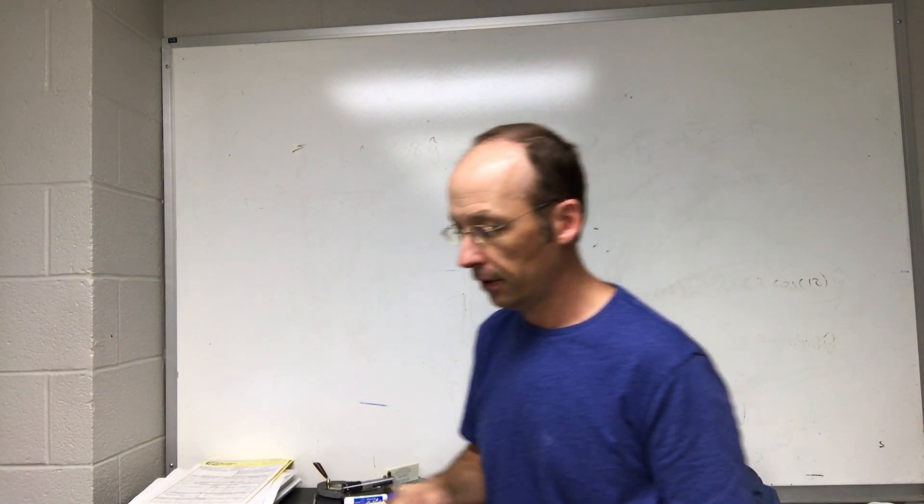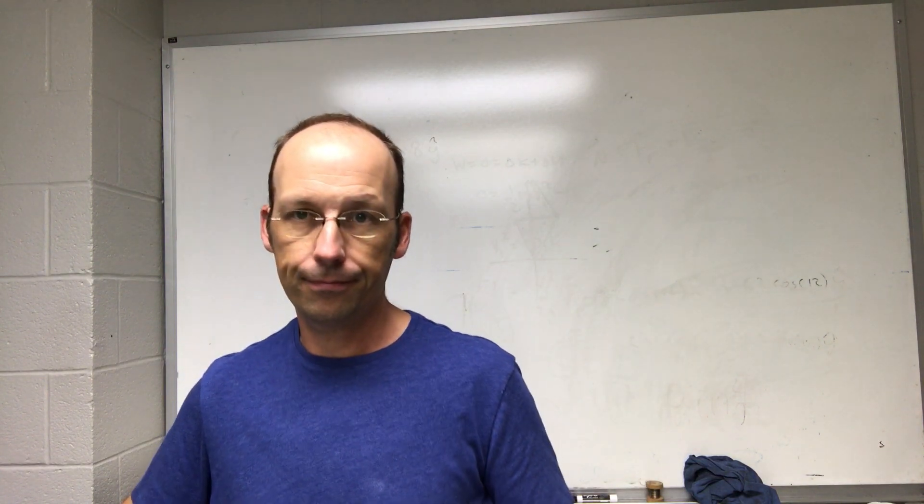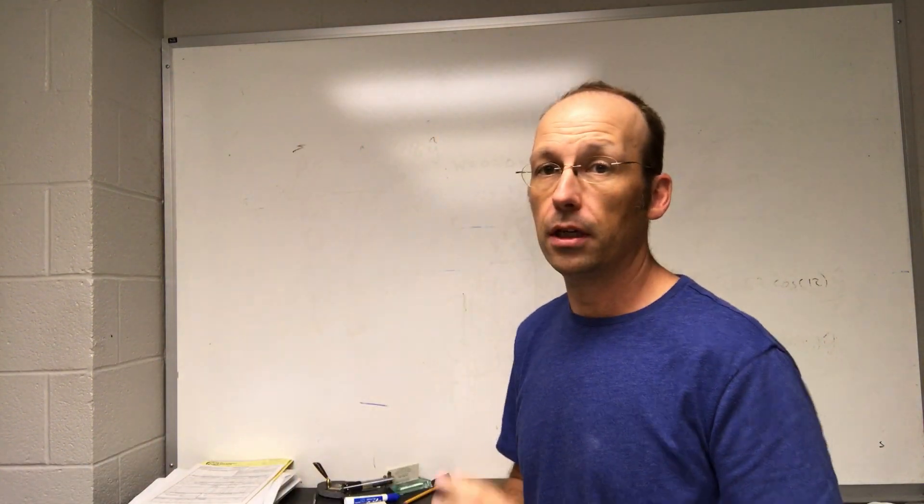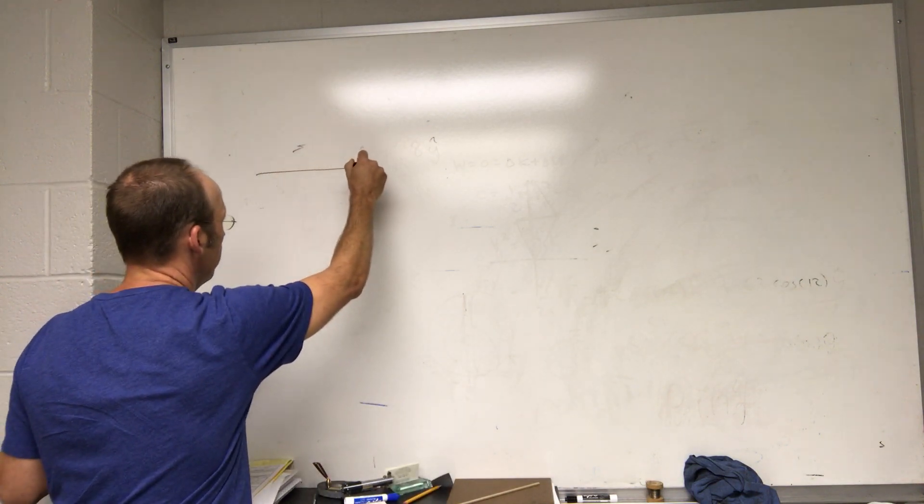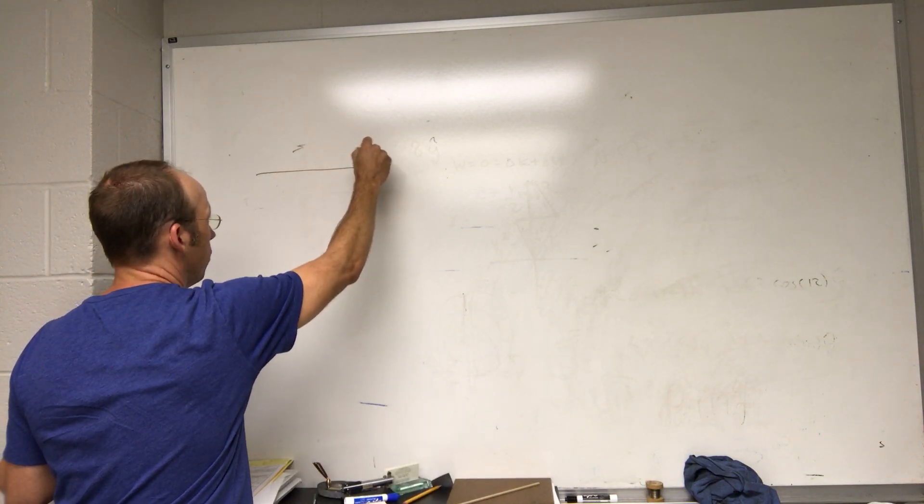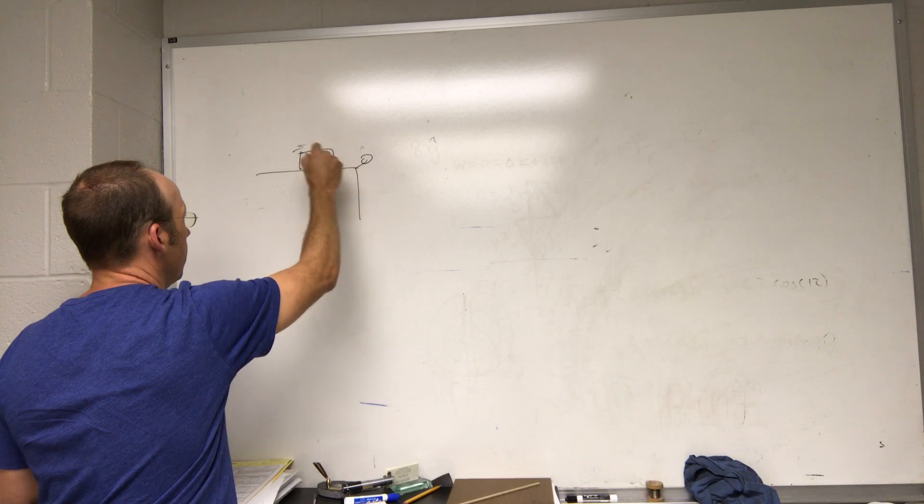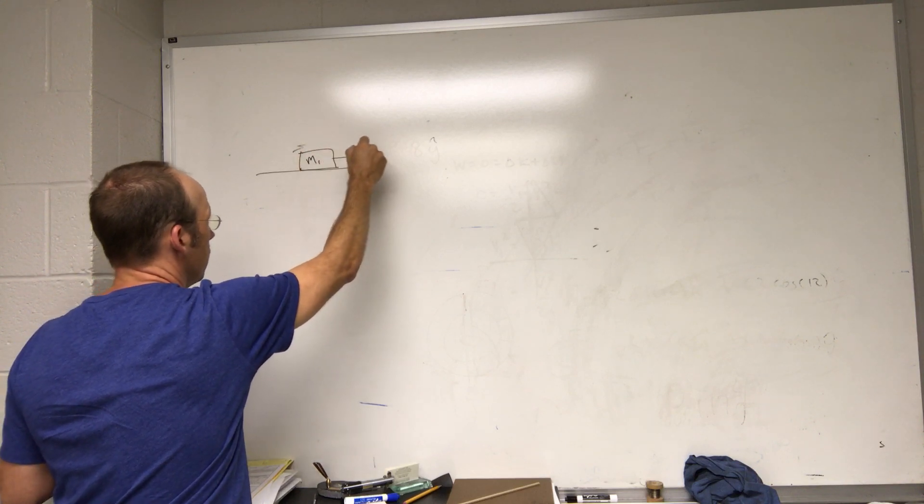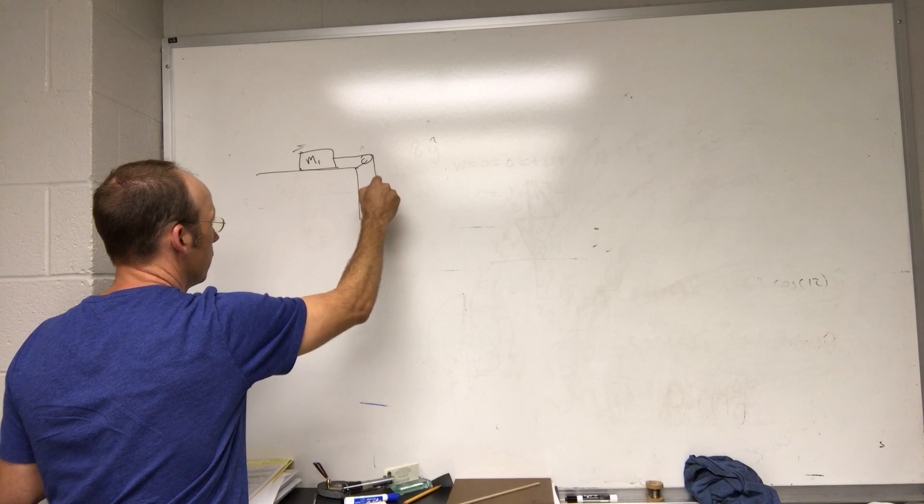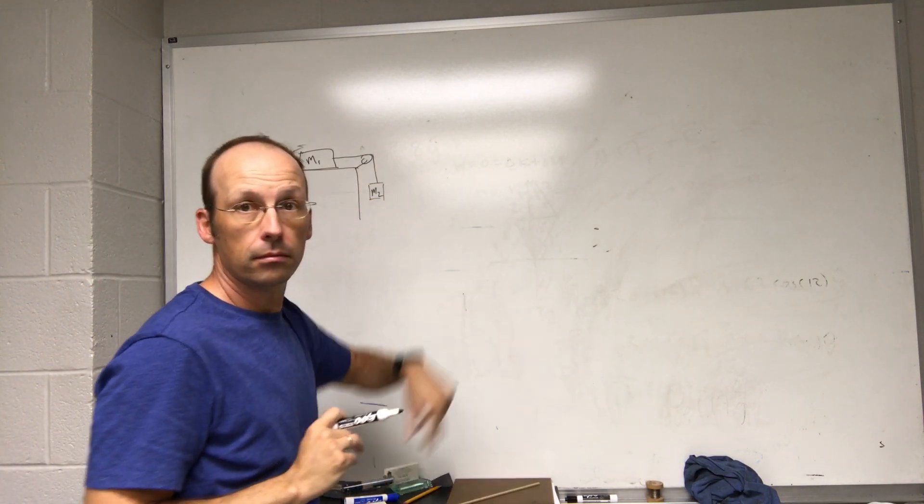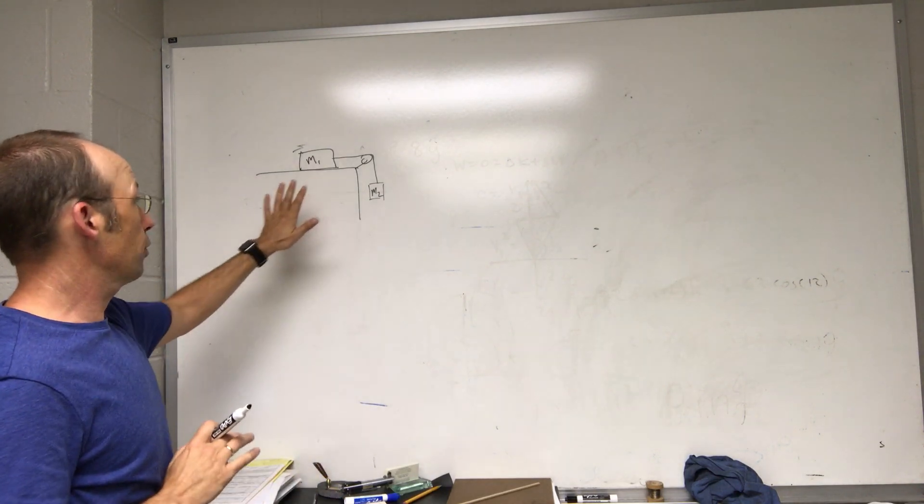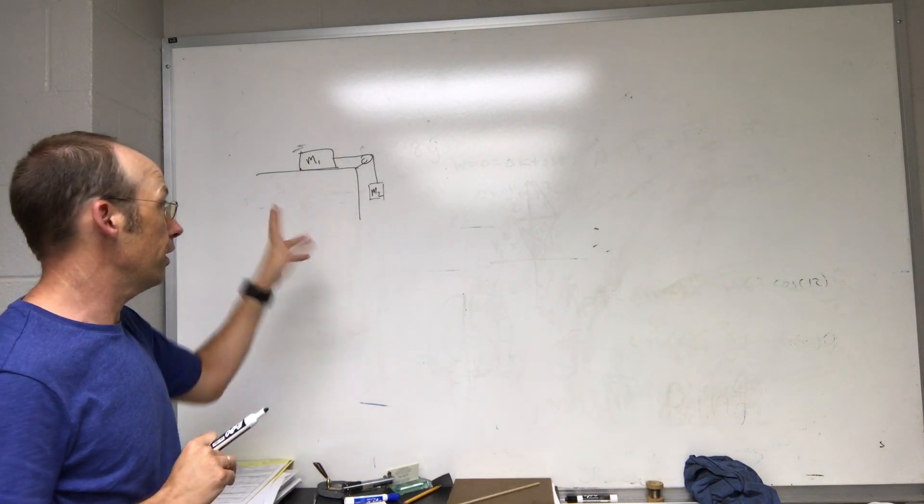Okay, here's a video for you. This is a problem, the Atwood machine with friction. So we start off with the table and then there's a pulley. There's a block up here, we'll call it m1, string, m2.